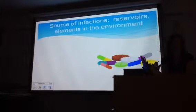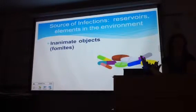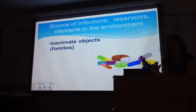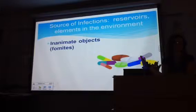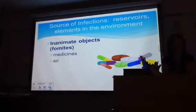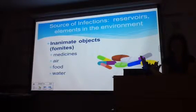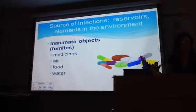Sources of infections include reservoirs and elements in the environment. We have inanimate objects, which are known as fomites — just another word for inanimate objects, like a door knob, a toilet seat, a desk. Also medicines, air, food, water, and blood.